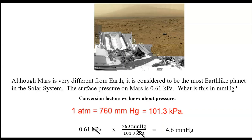That gives us 4.6 millimeters of mercury. On Earth that would be a strange answer, but Mars has less than one percent of Earth's atmosphere, so starting from 0.61 kilopascals versus Earth's 101.3 kilopascals, this is a reasonable result.